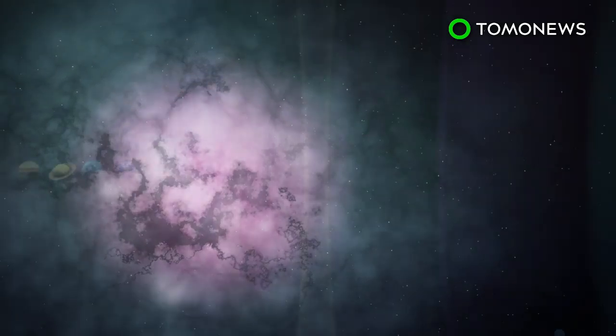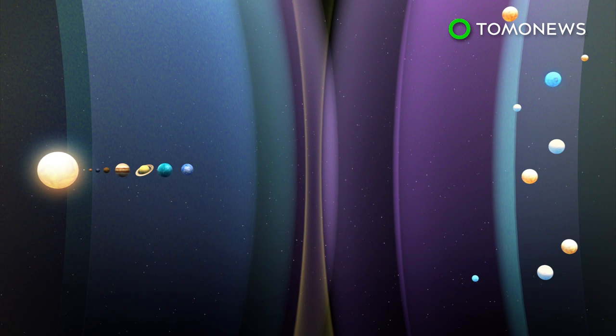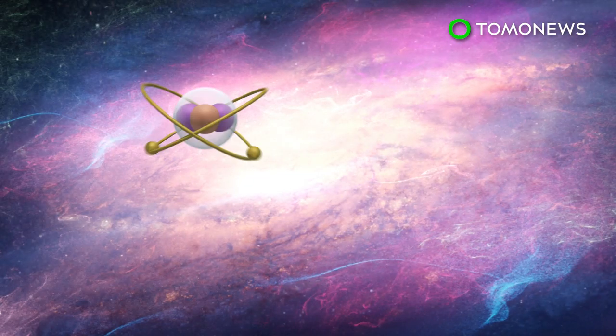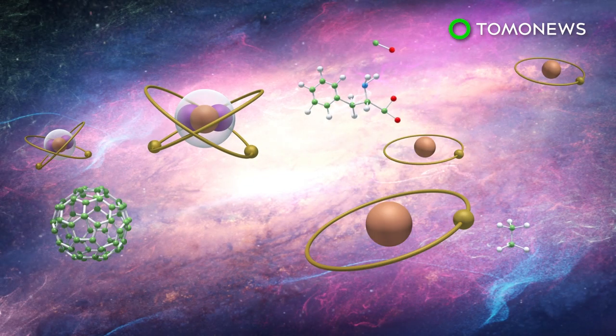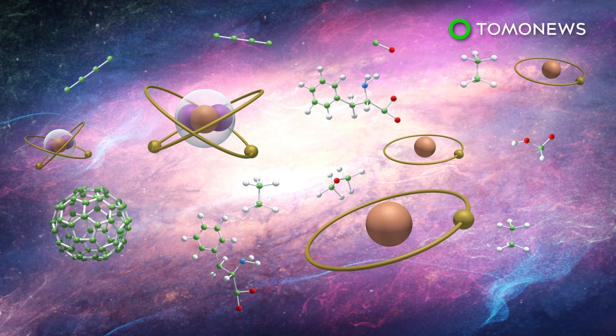The ISM is the diffuse matter and radiation that exists in between solar systems, which was previously considered too harsh an environment to sustain complex carbon-based molecules. Though most of it contains helium and hydrogen, it contains many other compounds that have not been identified.